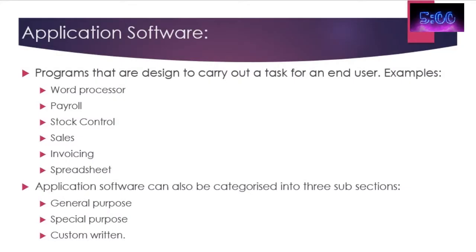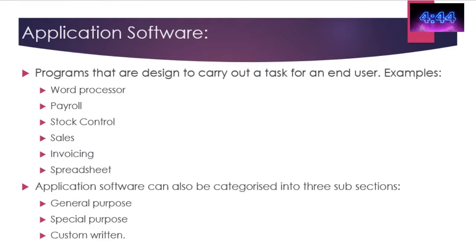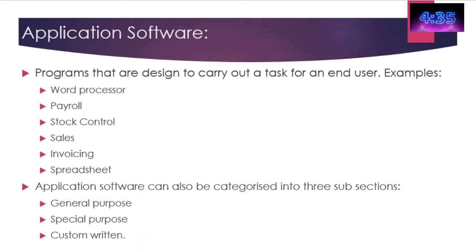Application software is any kind of software that helps the user perform a task. Here's a list of typical application software: it could be a word processor, stock control, or some invoicing system. Whatever the case, it's helpful software designed to aid the user in getting something done. Application software can be broken down into three different areas: general purpose, special purpose, and custom written.